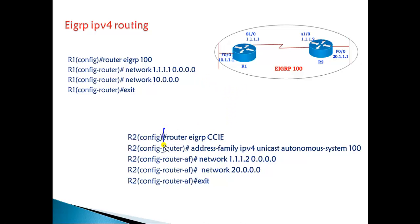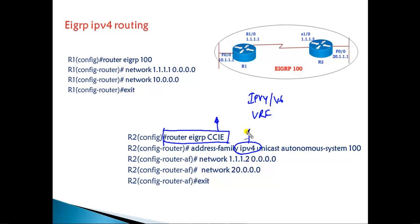In EIGRP name mode, we define 'router eigrp' followed by an instance name. All configurations related to IPv4, IPv6, or VRF used in MPLS implementations come under a single routing instance. For example, using the name 'CCIE', we get into the respective address family. For IPv4, we say 'address family ipv4' and define the autonomous system number under that address family — not directly under the router mode.